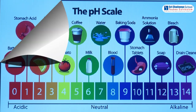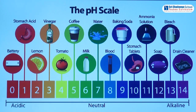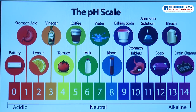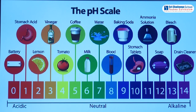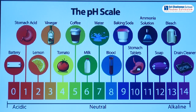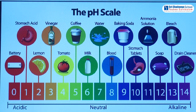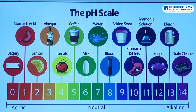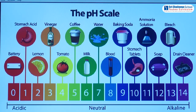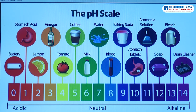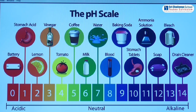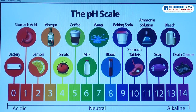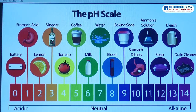A pH value more than 7 is considered a basic solution. On the scale, acidic solution ranges from 0 to 6 and basic solution ranges from 8 to 14. When the pH paper is dipped in the solution whose pH is to be found out, a color is developed on the pH paper, which is matched with the standard color chart. In place of pH paper we can use universal indicator.